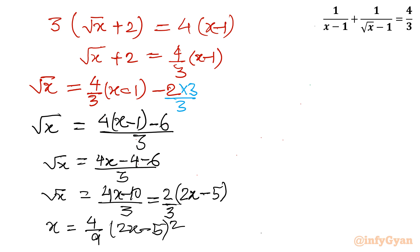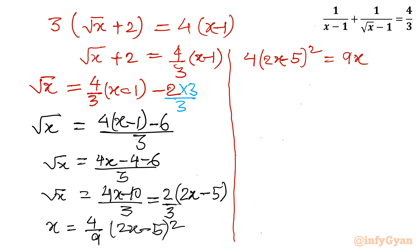Cross multiplying again: 4 times (2x minus 5) squared equals 9x. Now expanding: 4 times (4x squared plus 25 minus 20x) equals 9x, which gives 16x squared plus 100 minus 80x equals 9x.